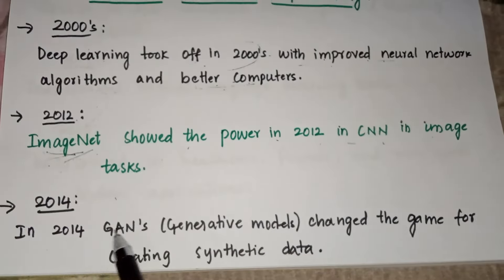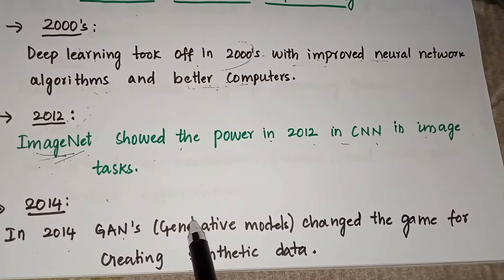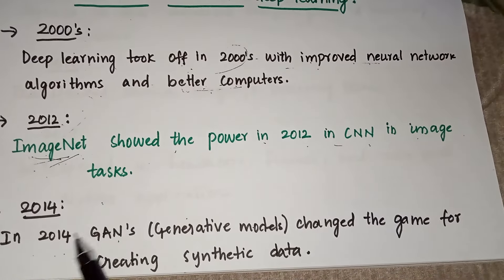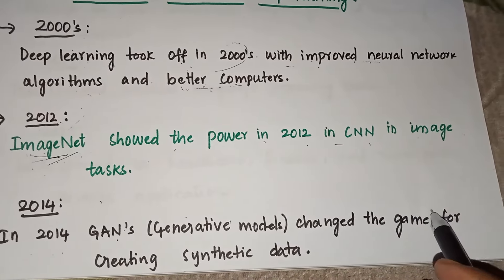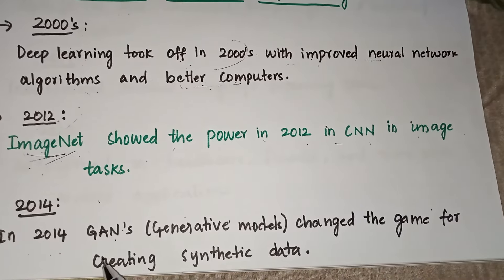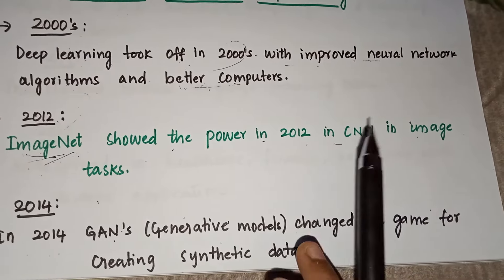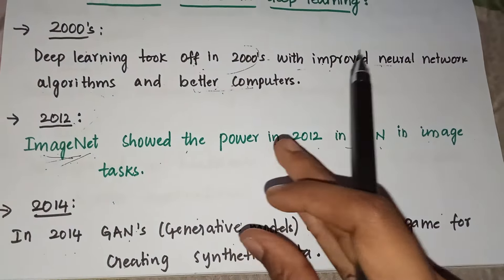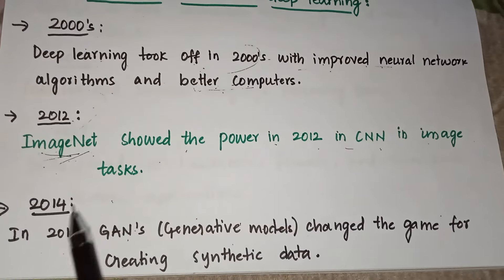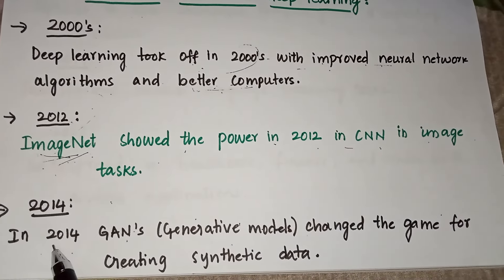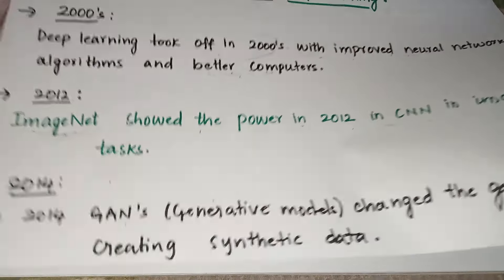In 2014, GANs came — Generative Adversarial Networks — which are generative models. They changed the game for creating synthetic data, for games and everything. We used GANs in 2014.